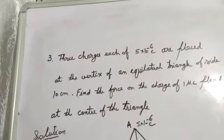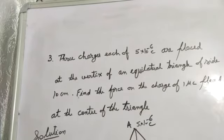Third problem, board per yeh raha, kya hai - three charges, each of 5 into 10 power minus 6 coulomb are placed.